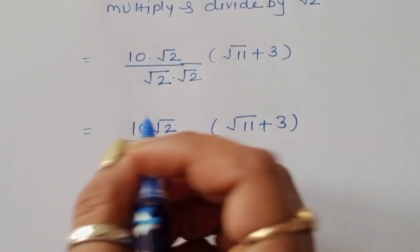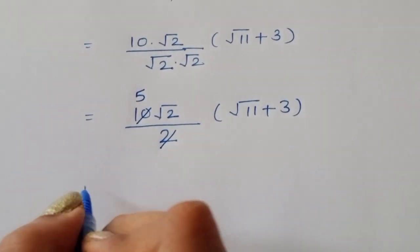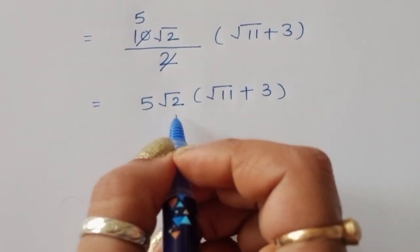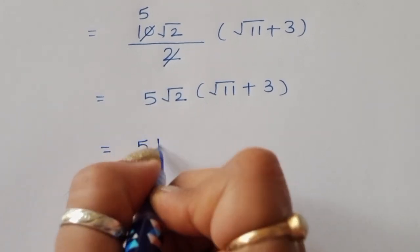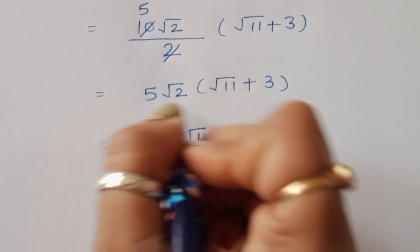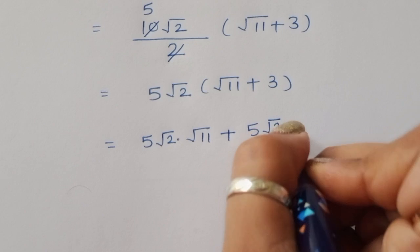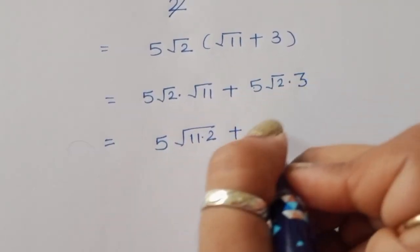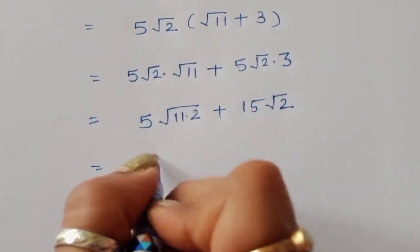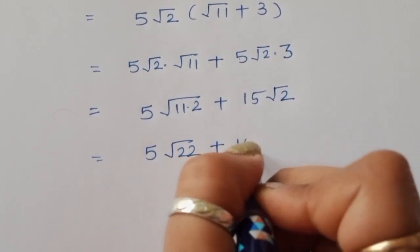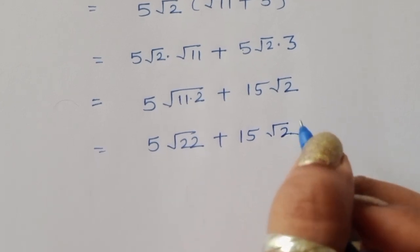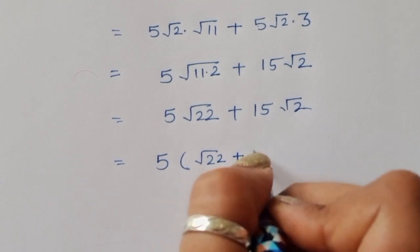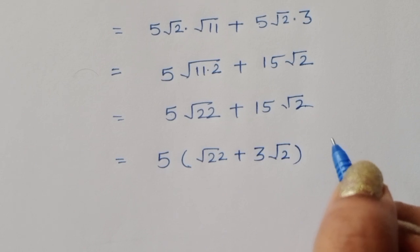We cancel: 10 divided by 2 equals 5. So we get 5√2 times (√11 plus 3). Multiplying out: 5√2 times √11 plus 5√2 times 3. That gives us 5√22 plus 15√2. Taking 5 as common factor: 5 times (√22 plus 3√2).